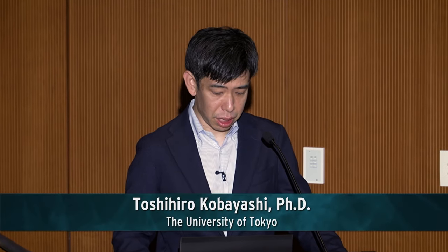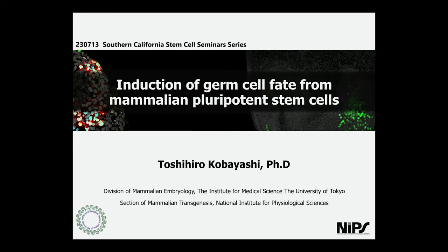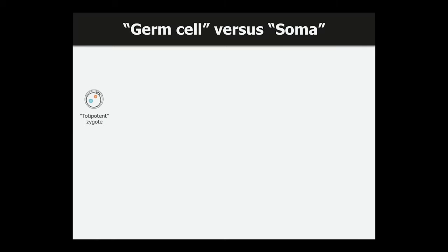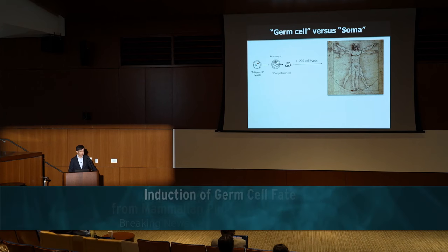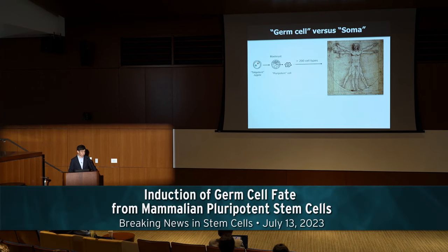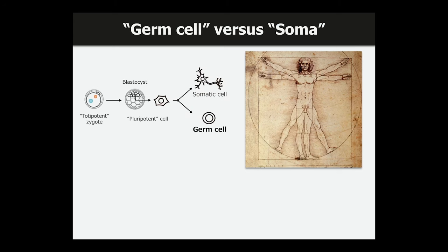I'm going to talk about the induction of germ cells from mammalian pluripotent stem cells today. Let me introduce germ cells a little bit. After fertilization, the totipotent zygote divides repeatedly and makes the unique structure called the blastocyst. The pluripotent cell in the blastocyst can produce more than 200 cell types to build our body. Although we have many cell types, we can simply classify them into two: somatic cells and germ cells.